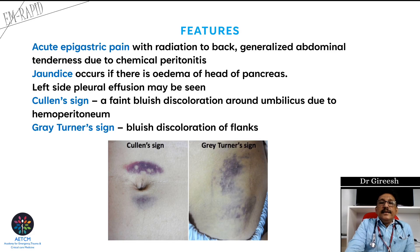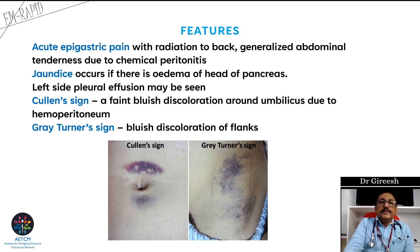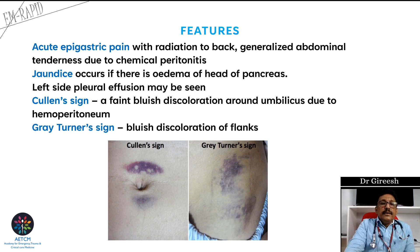The clinical features of pancreatitis include severe epigastric pain which may radiate to the back, and epigastric tenderness. Sometimes generalized tenderness is seen in chemical peritonitis. Many patients can have jaundice with yellowish discoloration of the skin and sclera, and left-sided pleural effusion. Cullen sign is a faint bluish discoloration around the umbilicus. Grey Turner sign is bluish discoloration of the flanks. These signs may not be visible in Indian patients due to skin color.